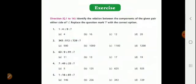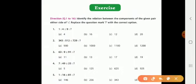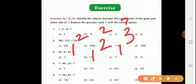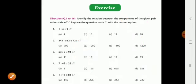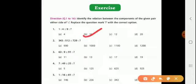Question one: Identify the relation between components of the given pair. One is to four as nine is to what? One squared is one, two squared is four, three squared is nine, so next it will be four squared which equals sixteen. The answer is sixteen - it's the square of every consecutive number: one square, two square, three square, four square.